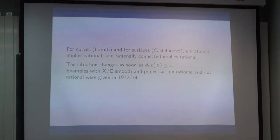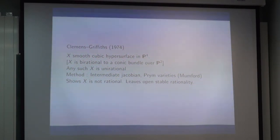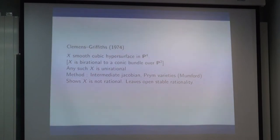The situation changes as soon as the dimension of x is at least three. Examples with x unirational and not rational were given in 1972–74. There were three examples. Clemens and Griffiths proved that the smooth cubic hypersurface in P⁴, which is unirational, is never rational. The tool they use is the intermediate Jacobian of such varieties — a quite elaborate method where you look at the dimension of the singular locus of a certain theta divisor. It works in dimension three but doesn't say whether x is not stably rational.